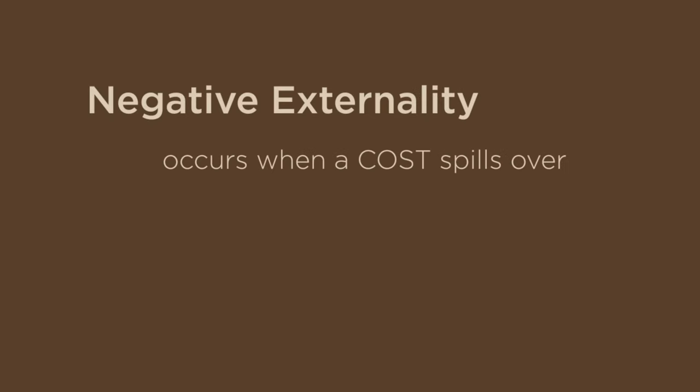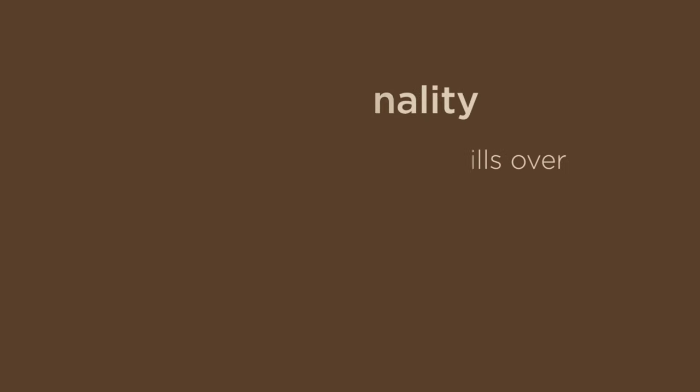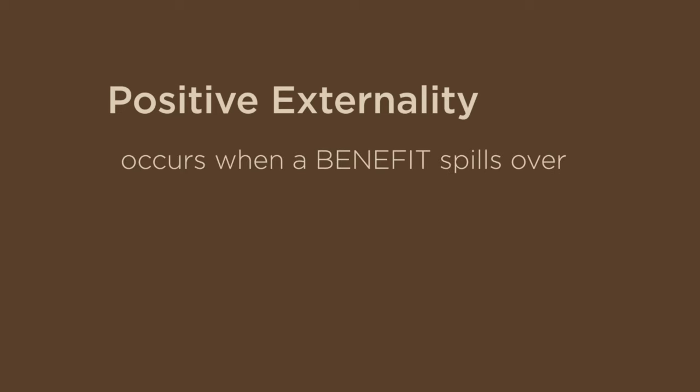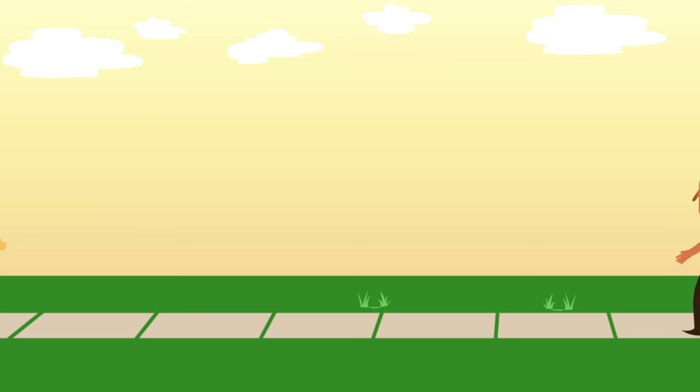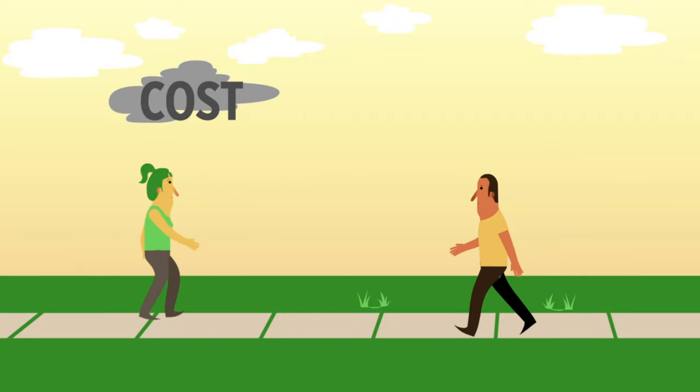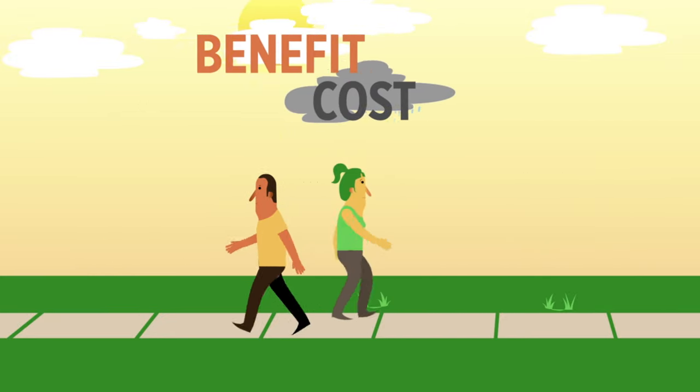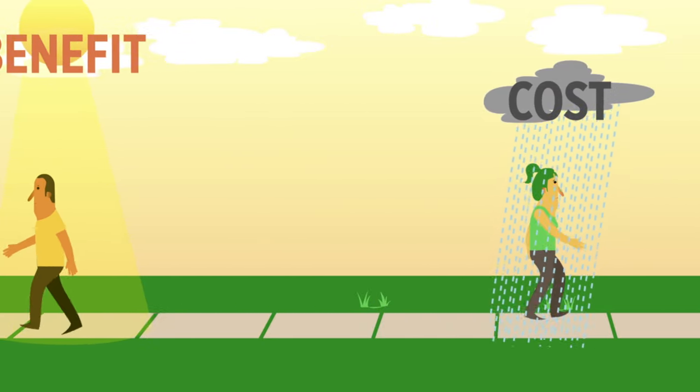A negative externality occurs when a cost spills over. A positive externality occurs when a benefit spills over. So, externalities occur when some of the costs or benefits of a transaction fall on someone other than the producer or the consumer.